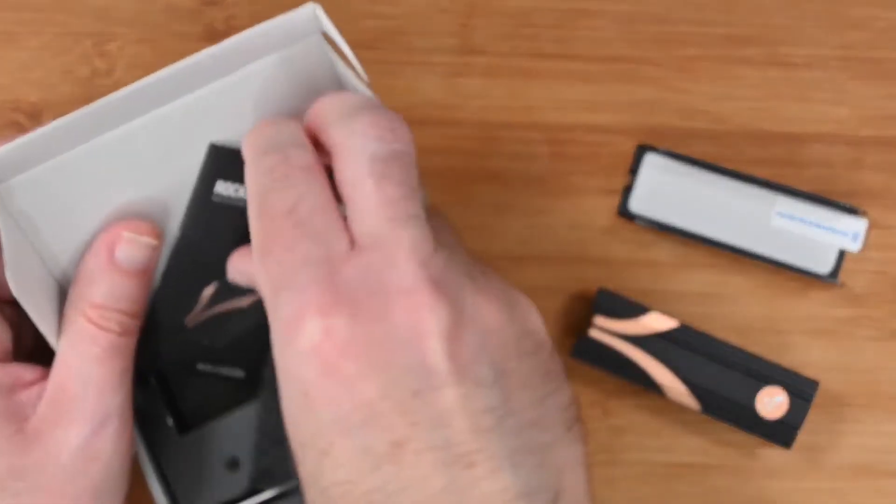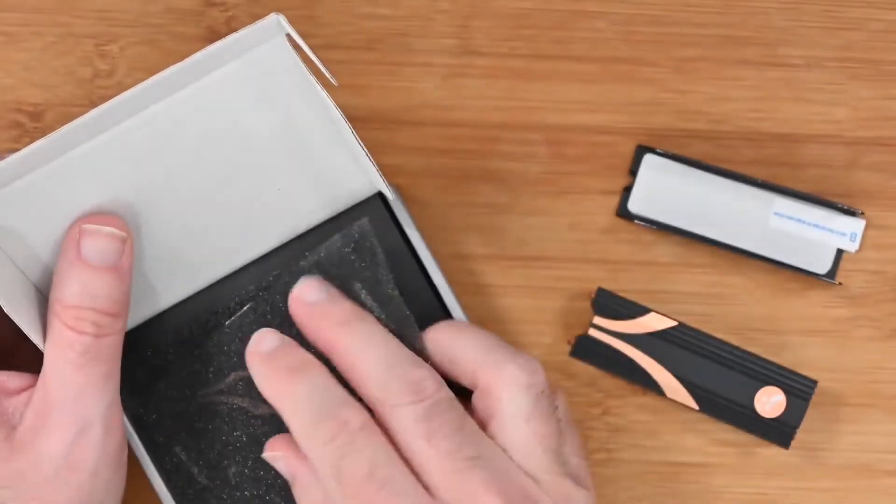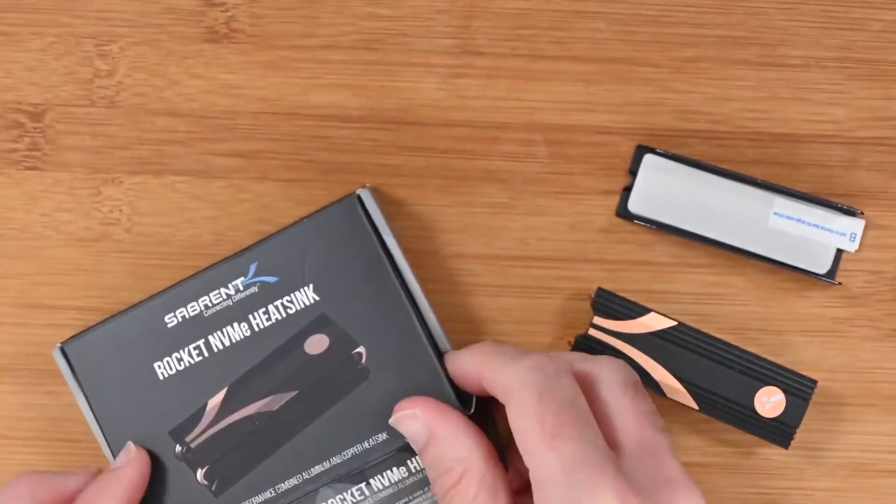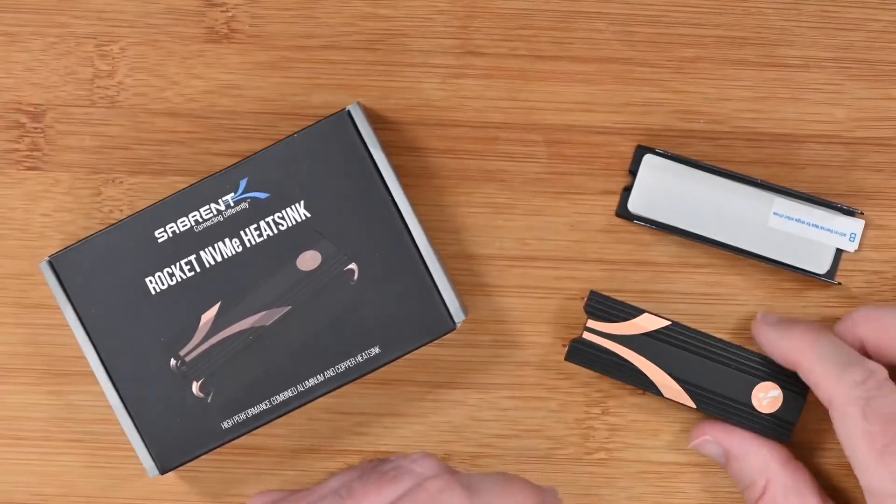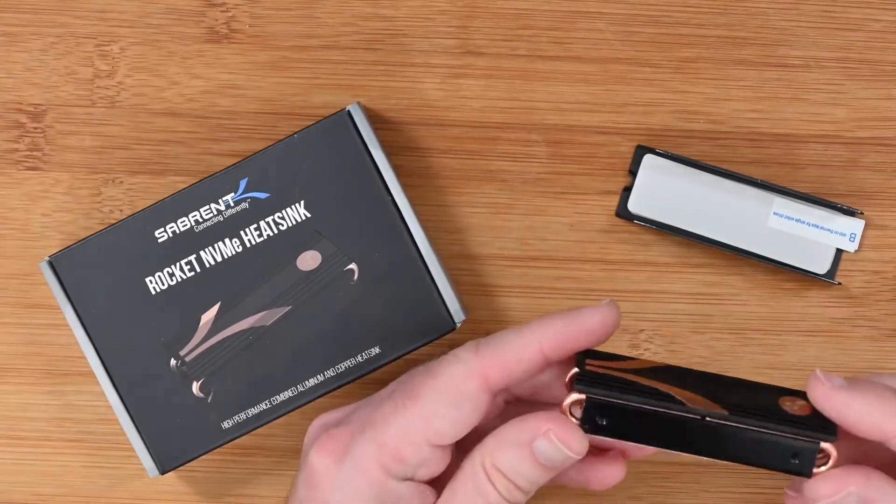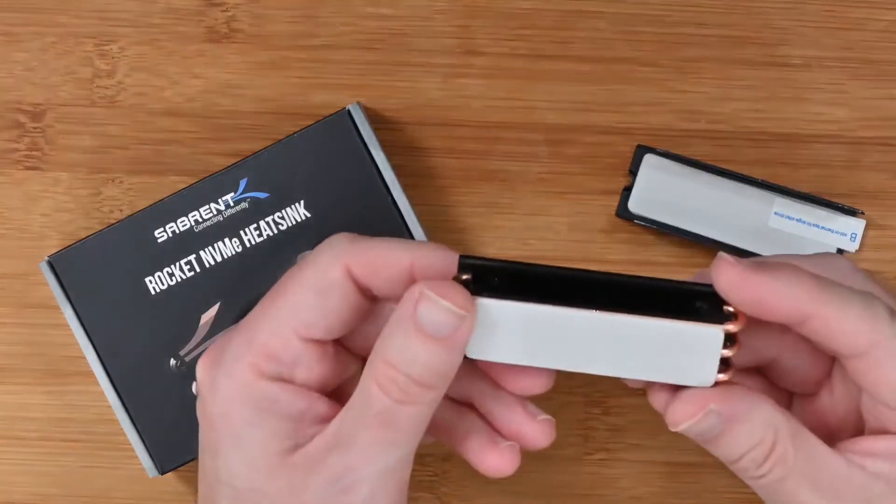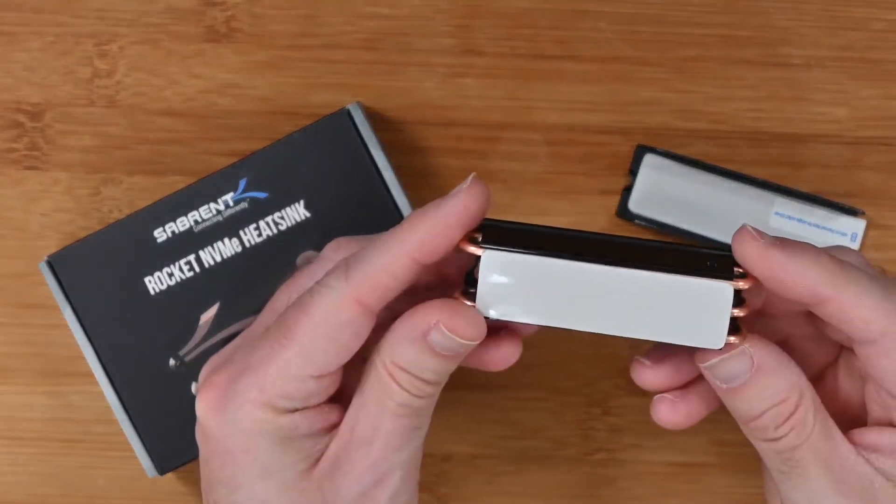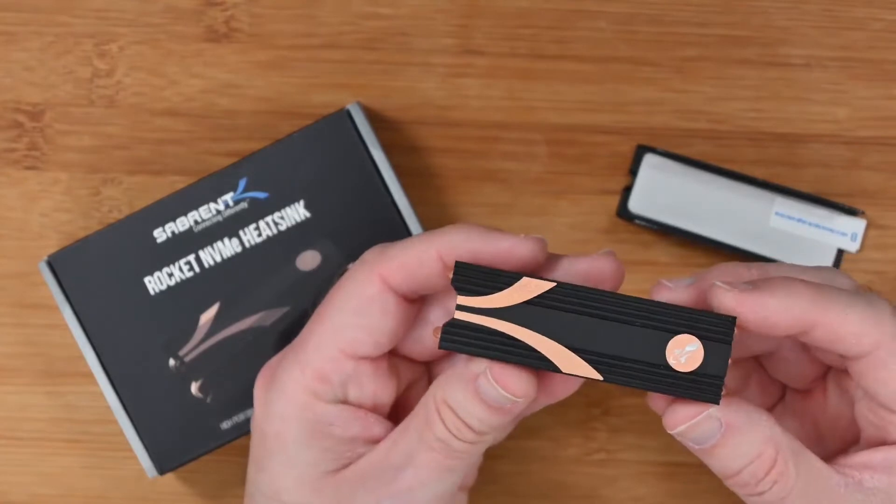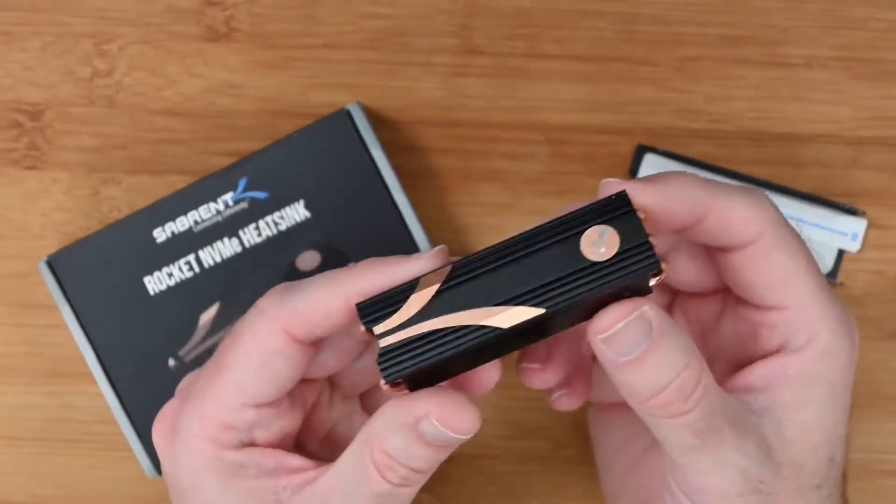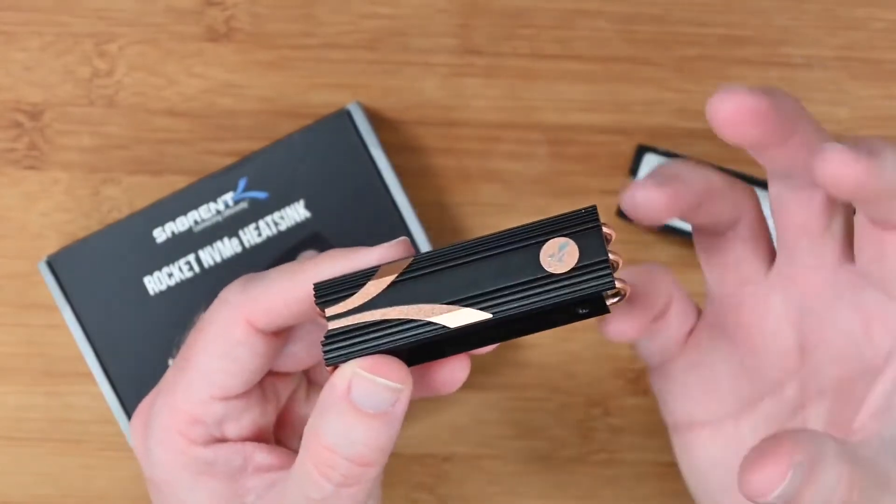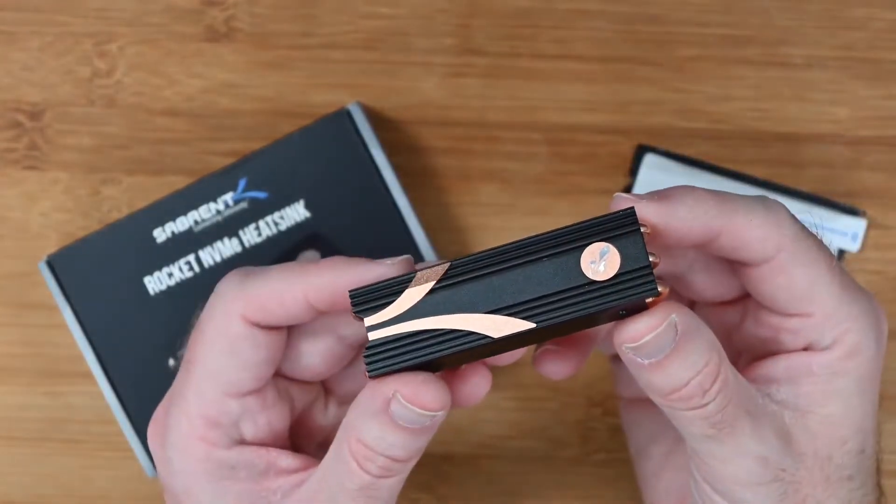This is, there's no going around it, a massive heatsink. It's compatible with single and double-sided M2 2280 SSDs and comes with multiple components that are all optimized to dissipate heat as much as possible. Inside, you place the SSD itself and on top of it goes an aluminum heatsink. That is then connected with copper heat coils to the topmost heat spreader, which has a fin design to maximize heat dissipation.